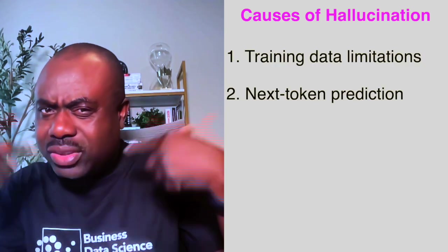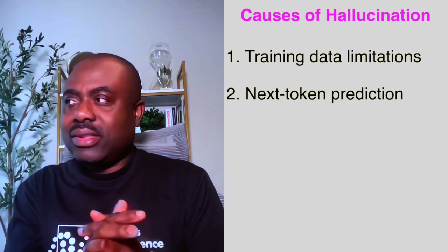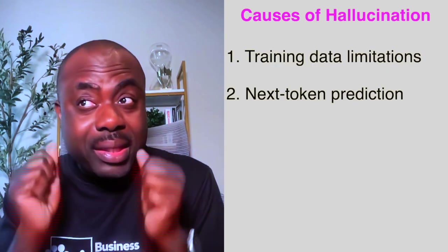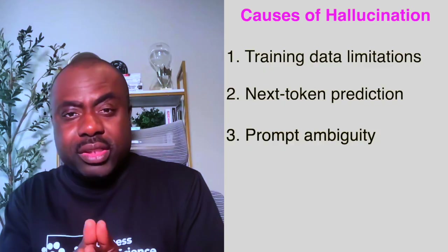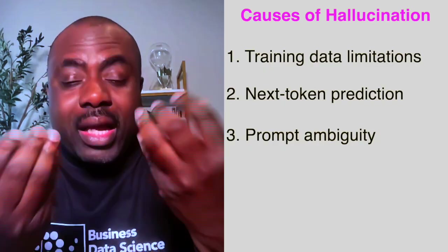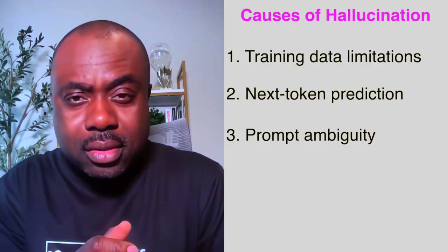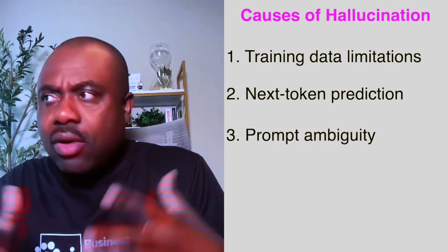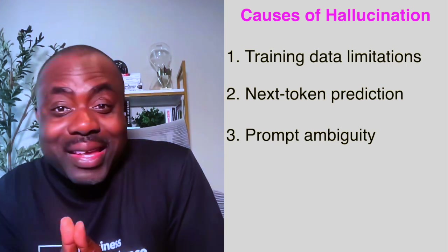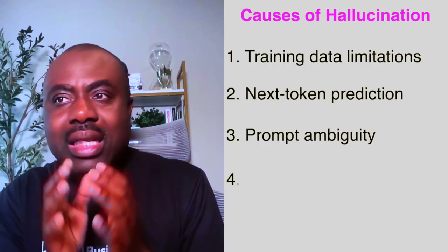Keep in mind that LLMs are only predicting the most likely sequence of words, and sometimes this leads to fabrications — that's just what it is. Number three is prompt ambiguity. Sometimes when you are prompting the AI system, if your prompt is very vague, it can cause the model to invent missing details and come up with its own thing.